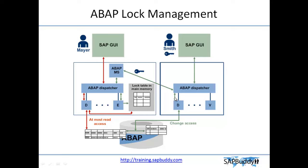The NQ work process marks the entry for locking and allows the user to edit. Remember, one SAP transaction may involve more than one table — all entries which need to be locked are internally determined. Once the changes are done and saved, the message is sent automatically and the NQ work process releases the specific lock.